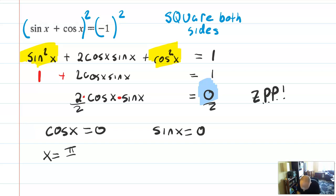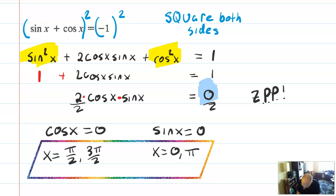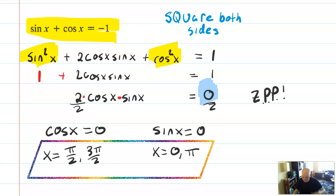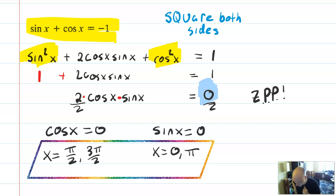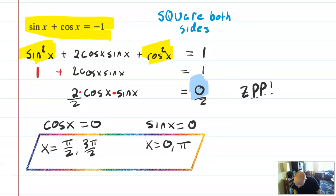Where's cosine equal to 0? π/2 and 3π/2. Where's sine equal to 0? How about x equals 0, and x equals π. Those are our four solutions for this equation. Now, knowing what the solutions are — they're kind of on the quadrant angles — the solutions make perfect sense. You need one of those two terms, sine or cosine, to be 0, and you need the other one to be negative 1.